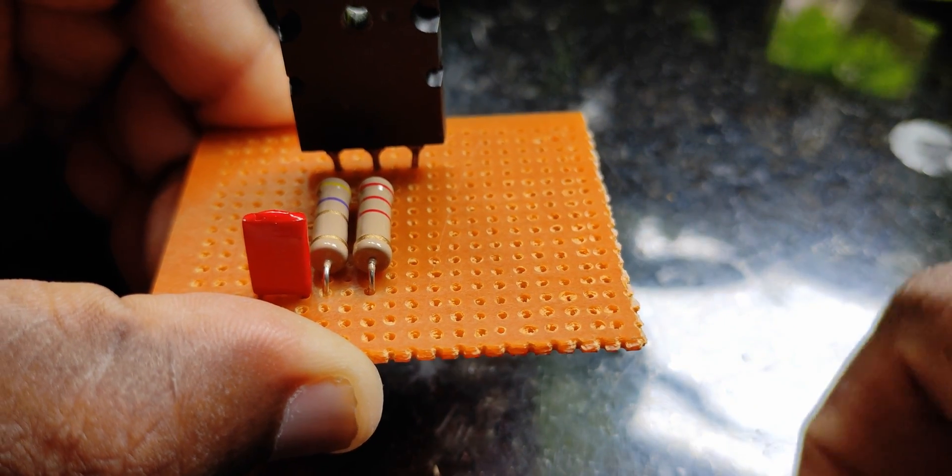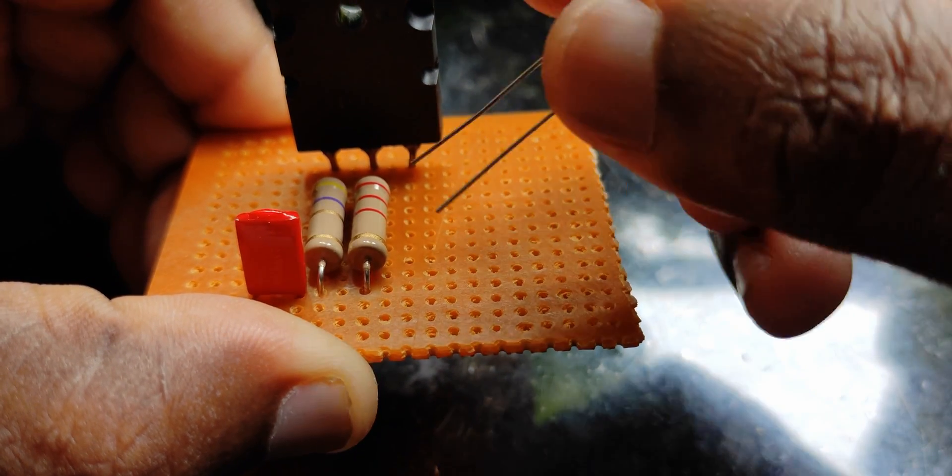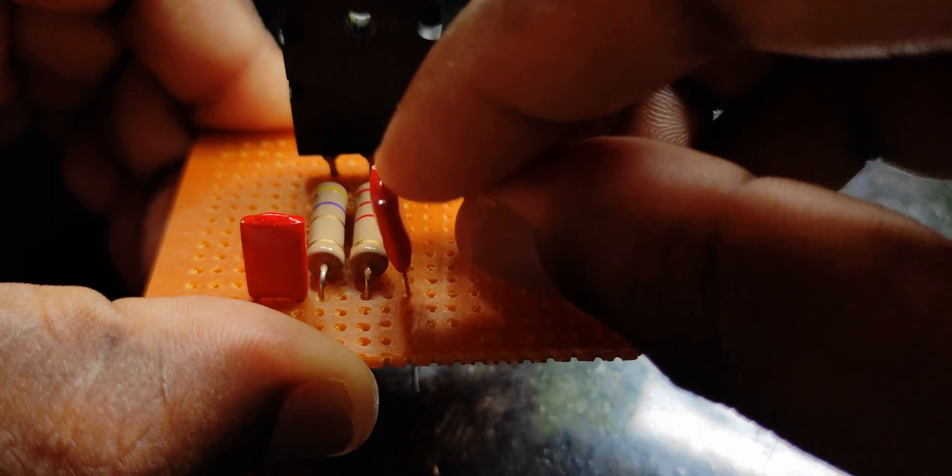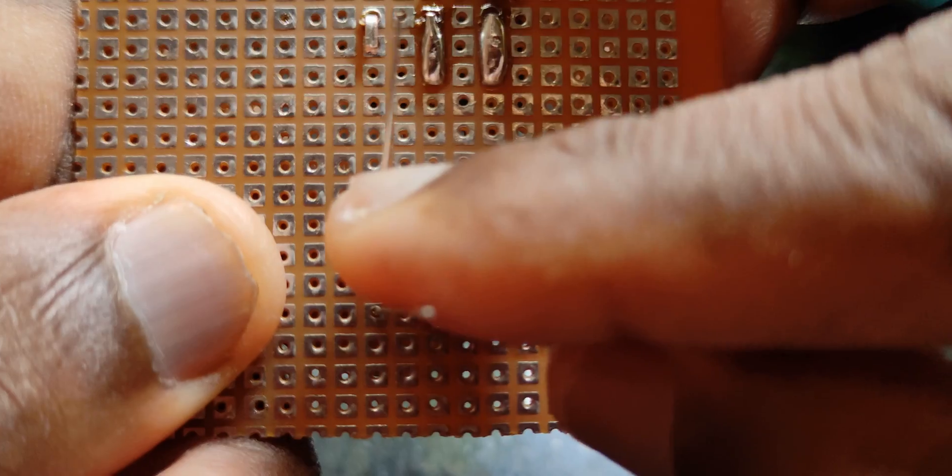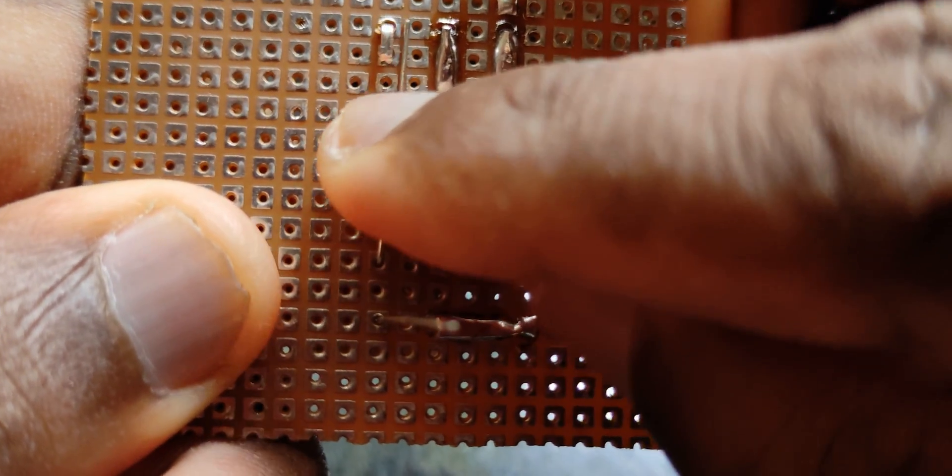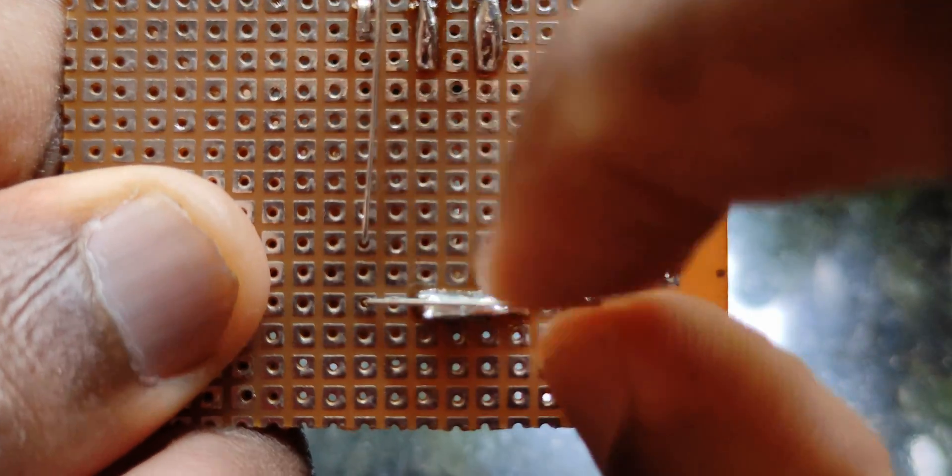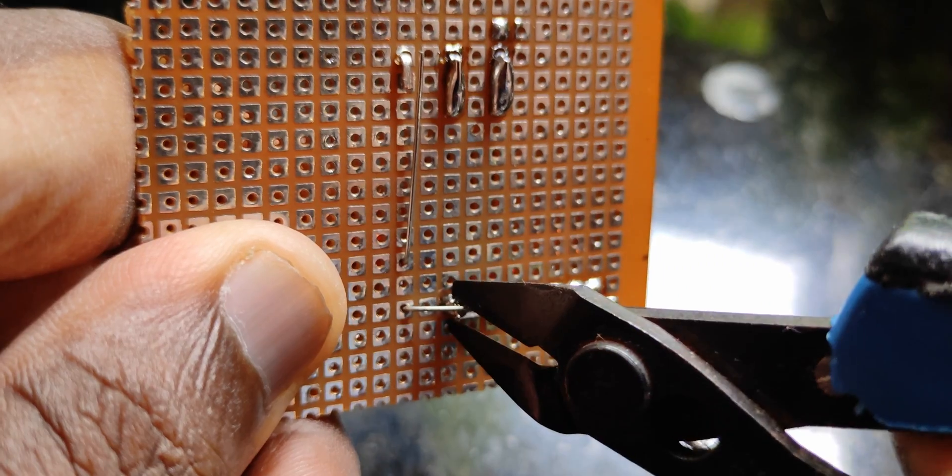Another capacitor goes from the emitter of the transistor to the node. I'm going to insert the cap right next to the 2.2k ohm resistor. Connect one terminal to the emitter and another one to the node—the point where the two resistors meet.